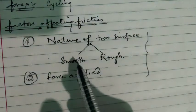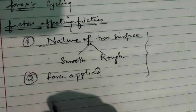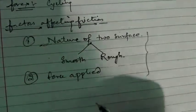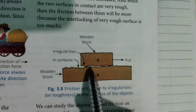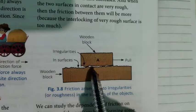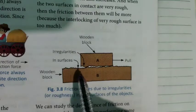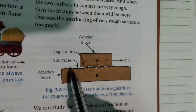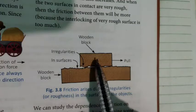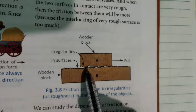Let us discuss the first factor: nature of two surfaces. As you can see in your book on page number 53, an example is given. Here two bodies A and B are in contact with each other. The surface on which they are in contact is quite rough. It will be quite difficult to move A over B because the frictional force between these two objects is too much due to the rough surface.